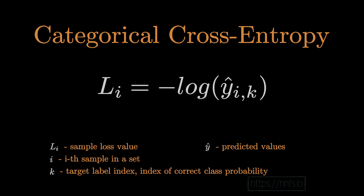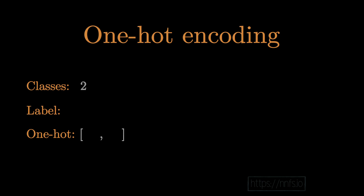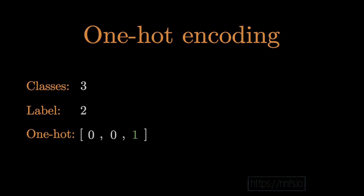The first thing to explain is one-hot encoding. The idea is that you have a vector that is N classes long — however many classes you have, that's how long the vector is. That vector is filled with zeros except at the index of the target class, where you have a one. For example, with three classes, if the label is zero, the one-hot vector would be [1, 0, 0].